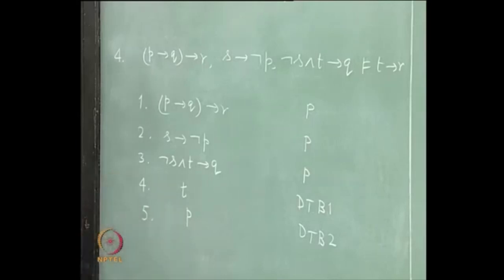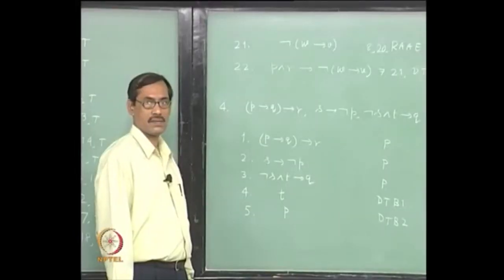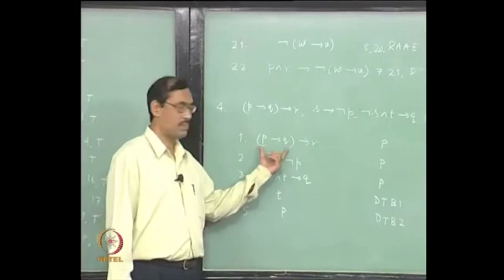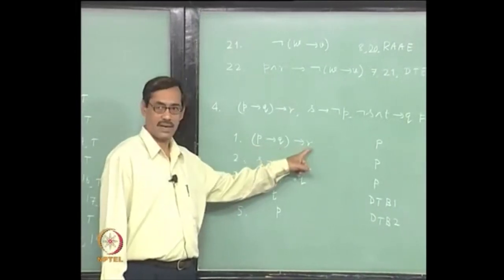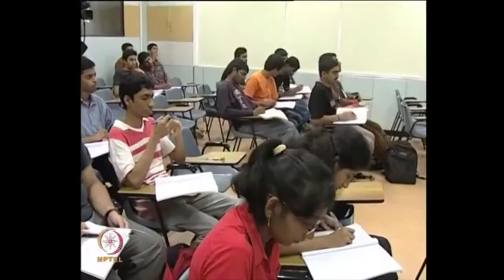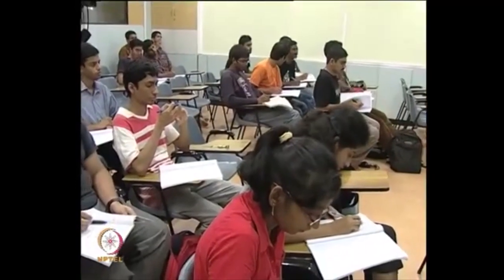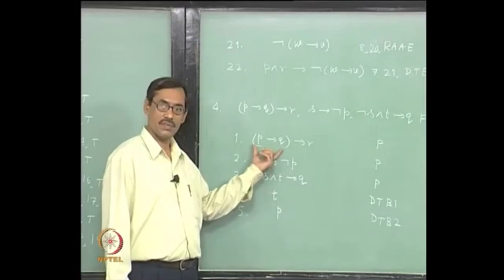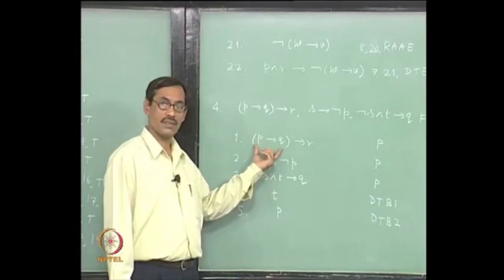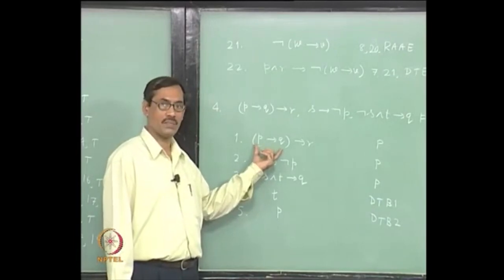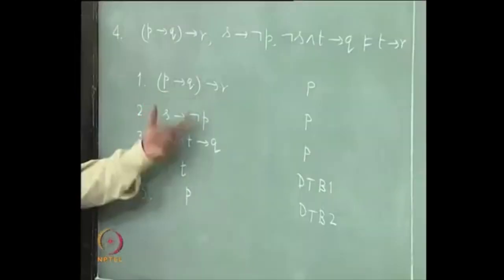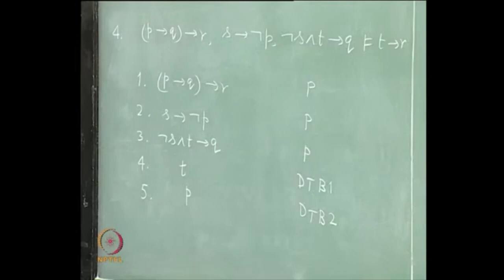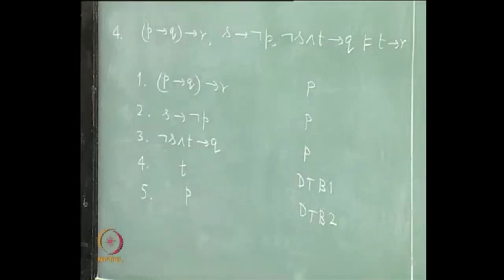Now P is an extra premise. How do we proceed? We want to show R. Now we have a premise: P implies Q implies R. So if we can prove P implies Q, by one application of modus ponens it is done. Now how to prove P implies Q? By deduction theorem, I can assume P and derive Q. That is what I am doing. So it is a sub proof inside the proof. That is possible because of this looping and nesting.